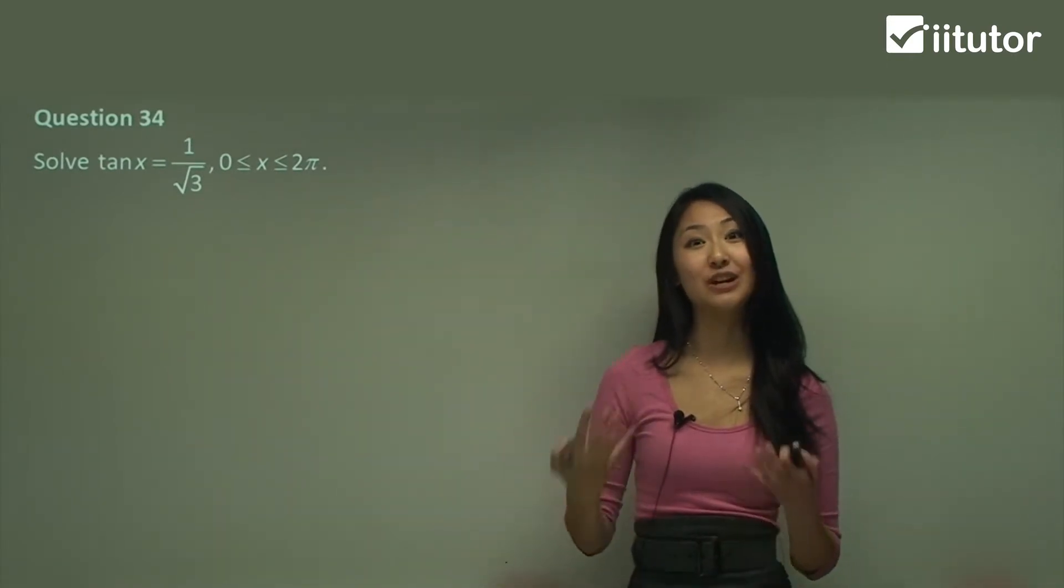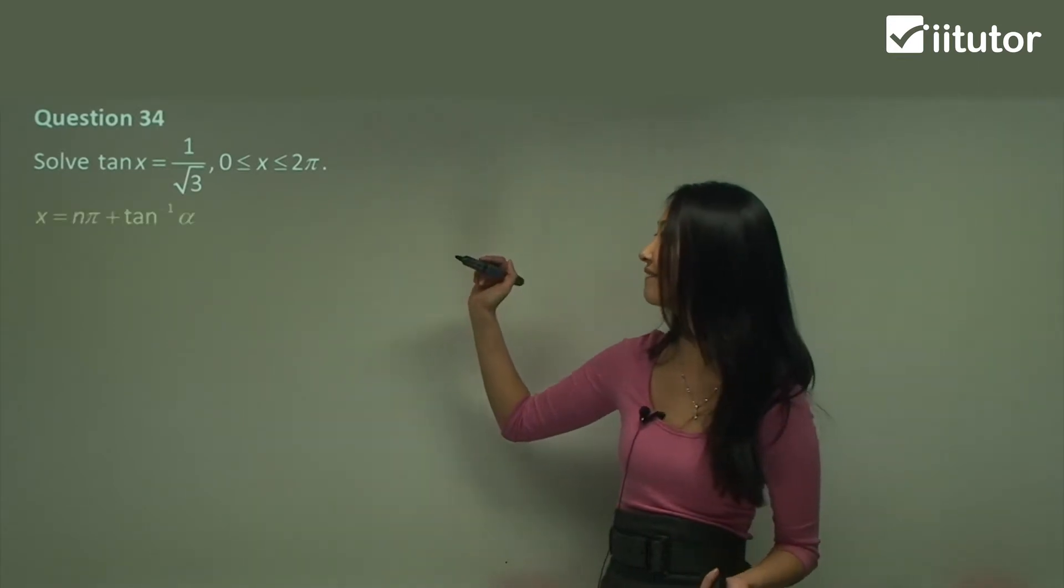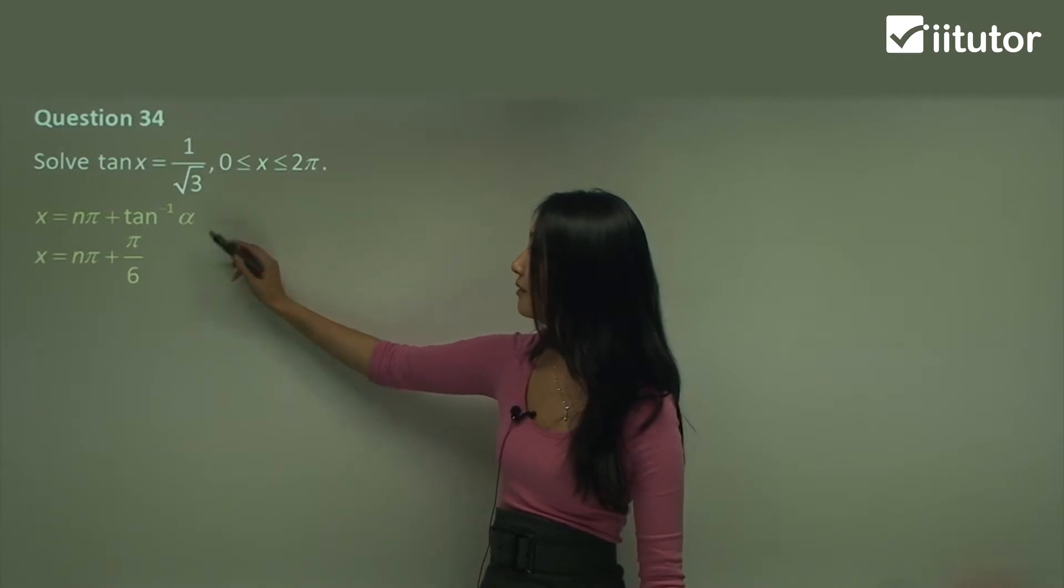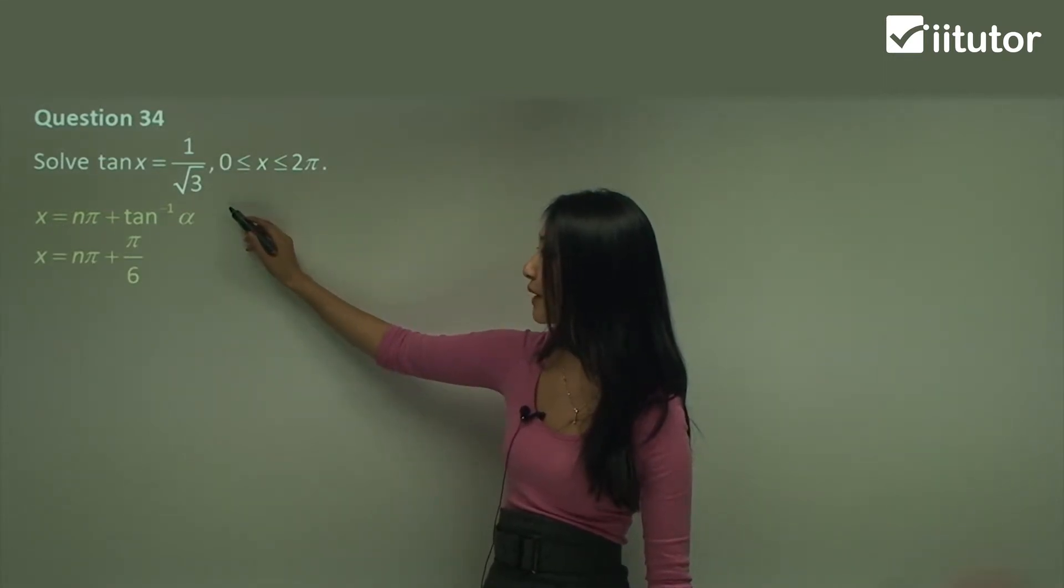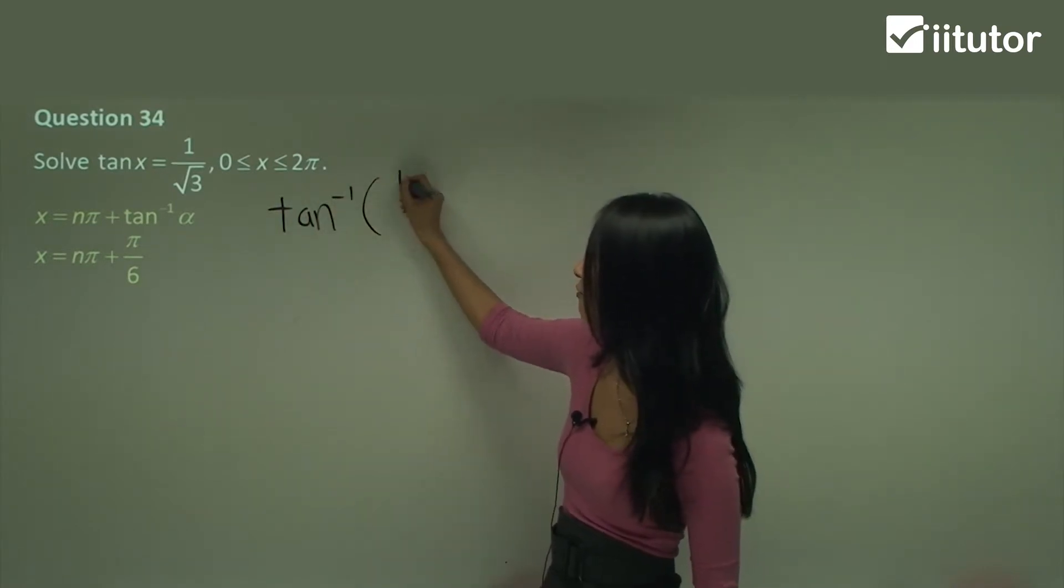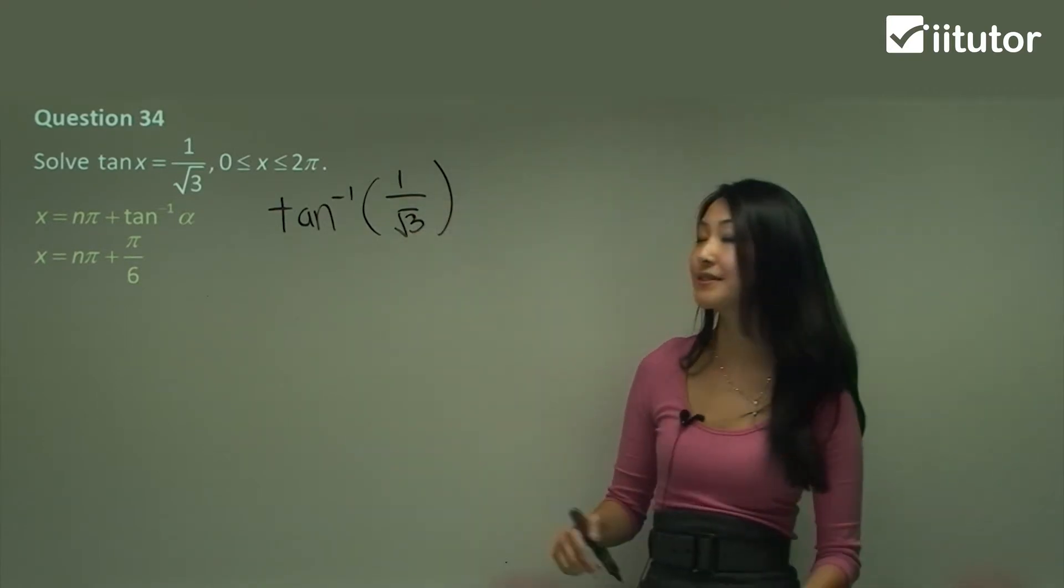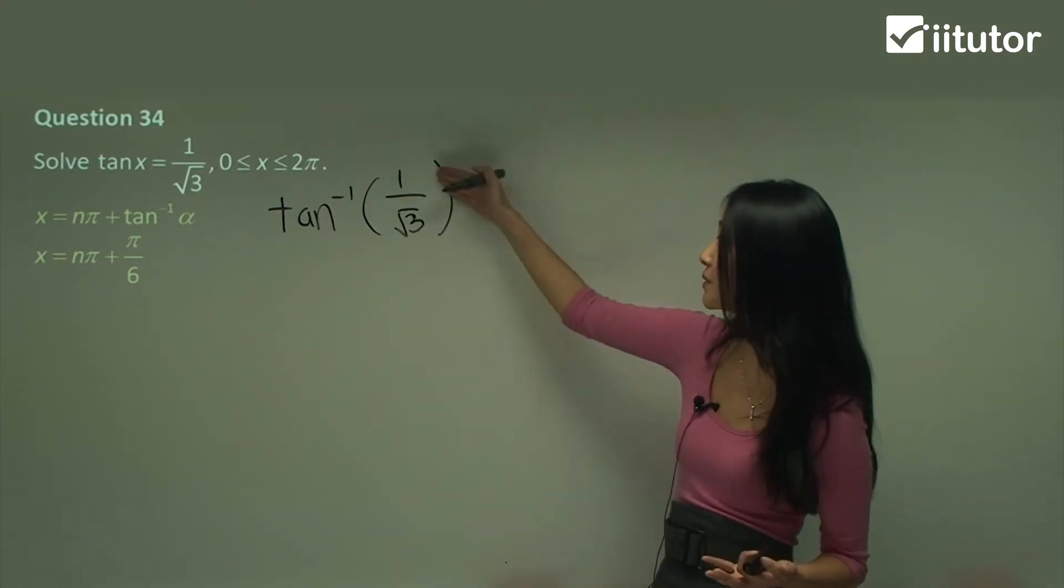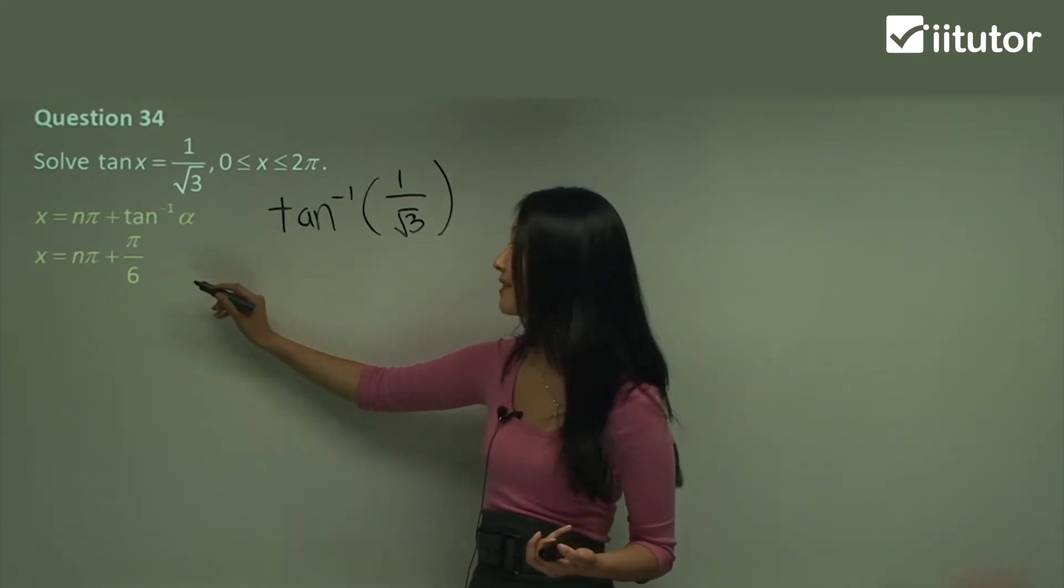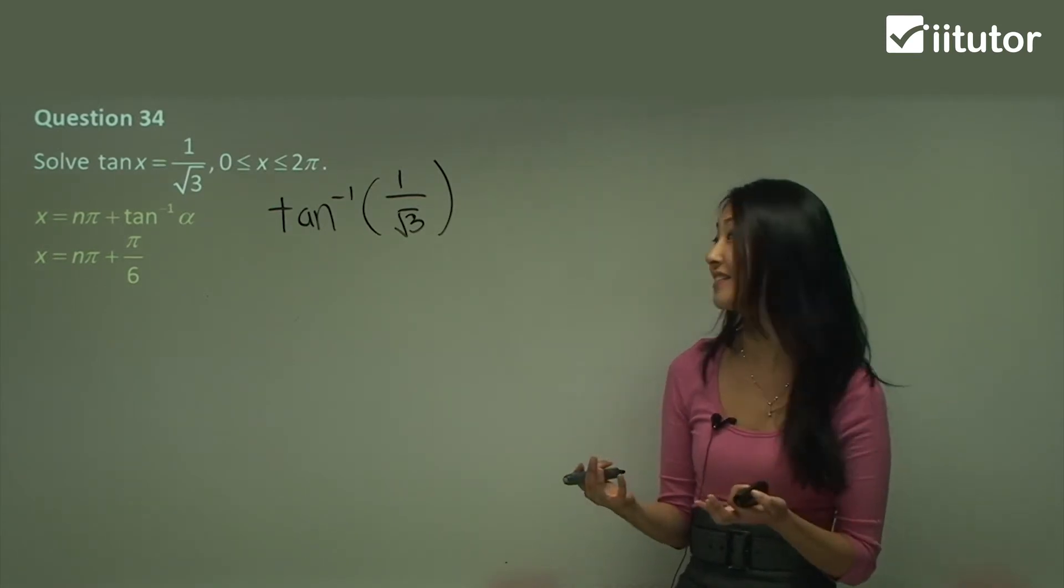We're going to use the general solution to work out the actual values between that domain. So general solution, substituting in one on square root three, we have tan inverse of one on square root three, and we think to ourselves, tan of what equals one on square root three? That's pi on six.